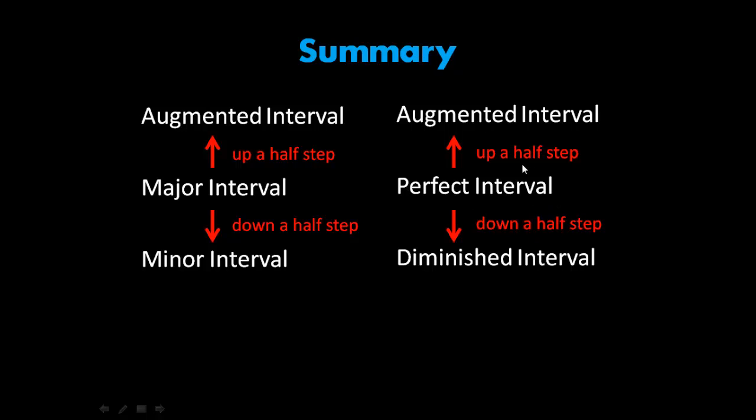And then for perfect intervals, if you go up a half step, it turns into an augmented interval, just like for major intervals. However, if you go down a half step, it turns into a diminished interval. So that's a key difference between major intervals and perfect intervals.